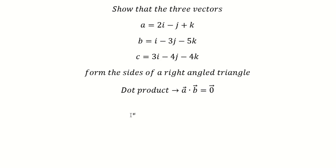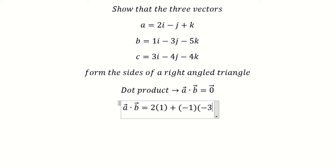We can do the dot product here. So we have 2 multiplied by 1, negative 1 multiplied by negative 3, and 1 multiplied by negative 5.